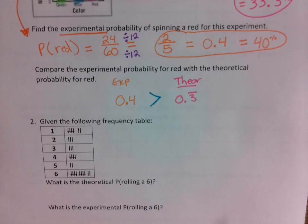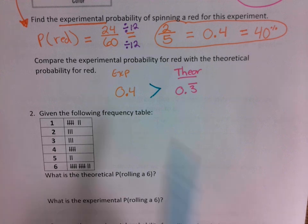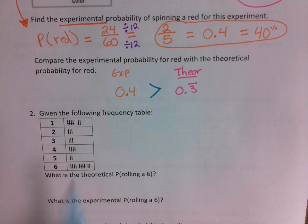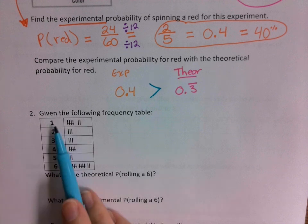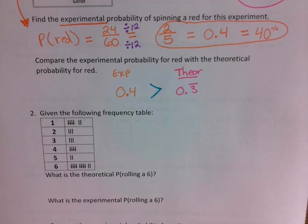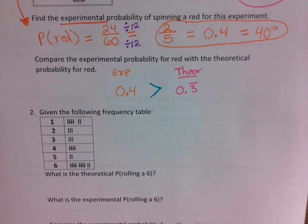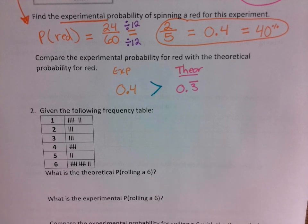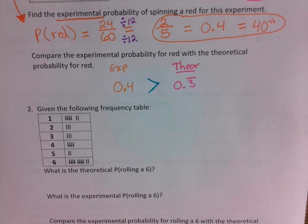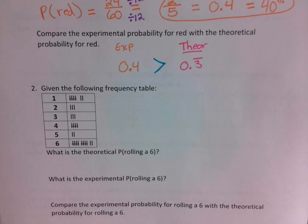I want you to go ahead and do problem number two on your own. Given the following frequency table for rolling a die: we landed on 1 seven times, 2 three times, 3 three times, 4 five times, 5 two times, and 6 twelve times. Identify the theoretical probability of rolling a 6, identify the experimental probability of rolling a 6 in all three forms, and then make a comparison of your experimental to your theoretical.